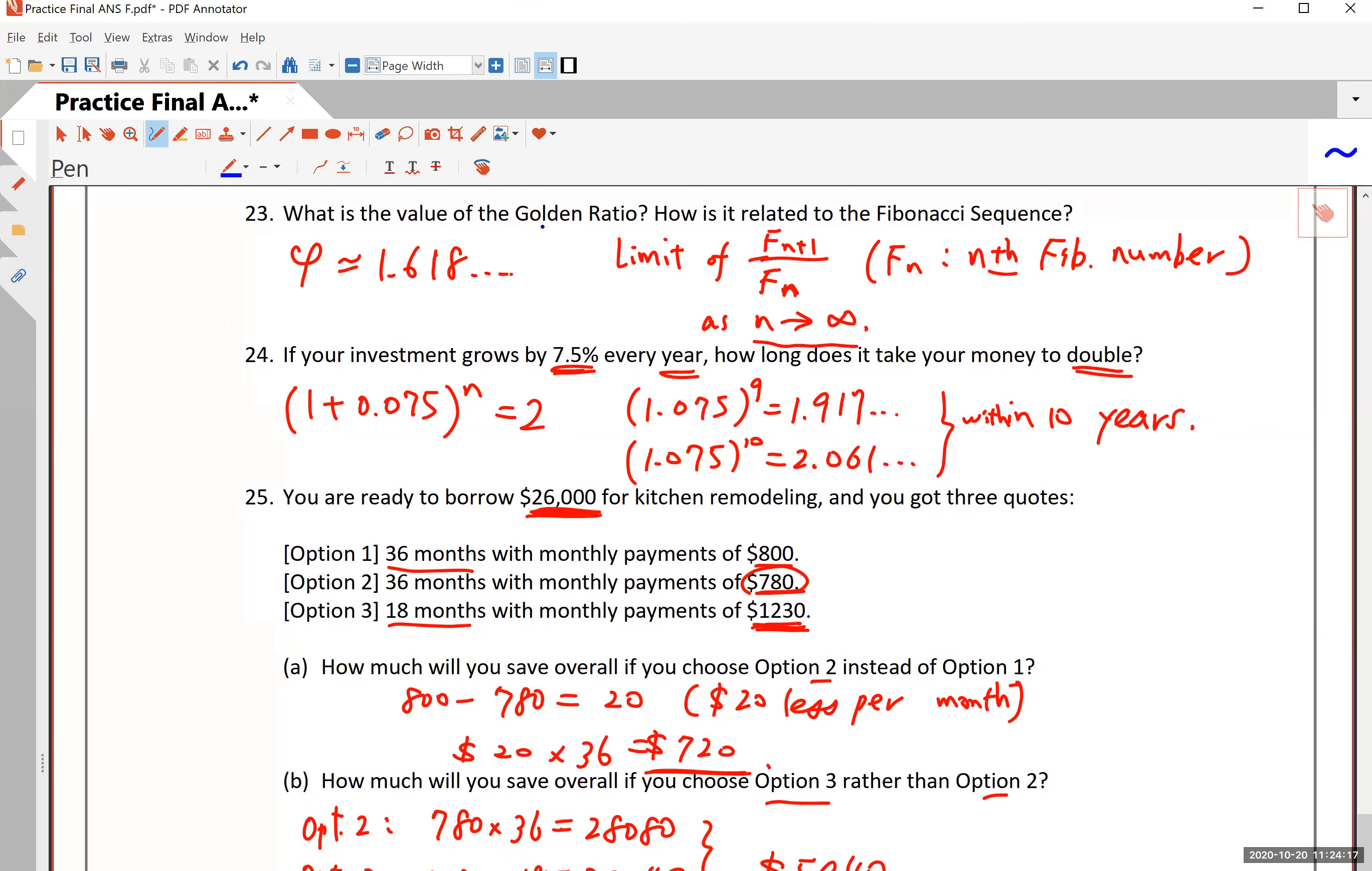Okay, number 23. What's the value of the golden ratio? I gave you a little formula here. You don't have to know this one. This is really the golden ratio. It's an irrational number. All you need to know for this class is that this golden ratio is approximately 1.6.